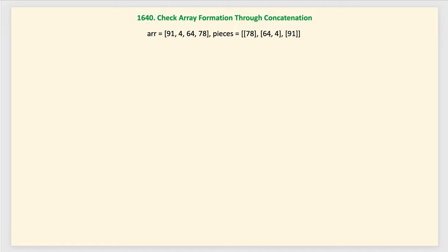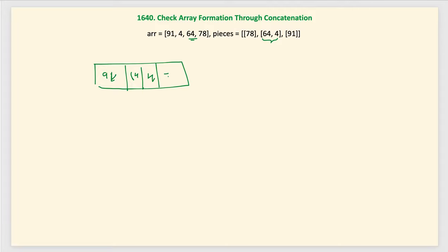Now let's look at a negative example where I swapped 64 and 4. When constructing the result array: 91 gives [91] correctly, but 4 is not a key so we get nothing there, then 64 gives [64, 4], then 78 gives [78]. The resulting array doesn't match the original, so we return false. Even though the same elements are present in both, we can't reorder within a piece, so it fails.